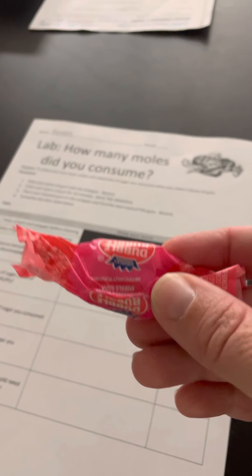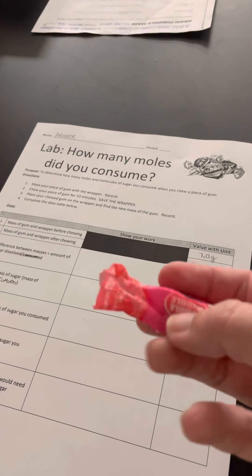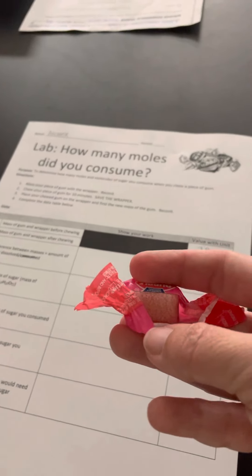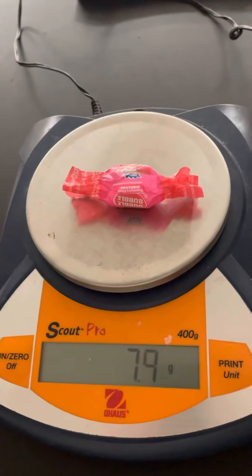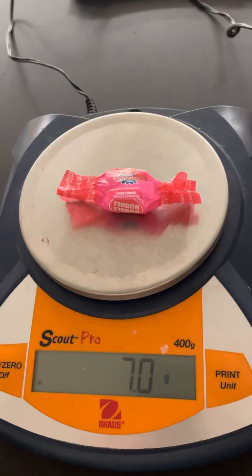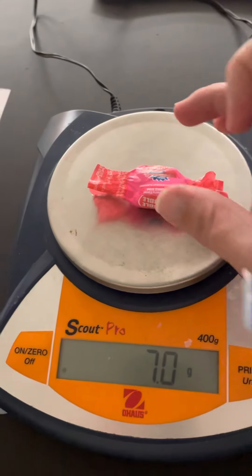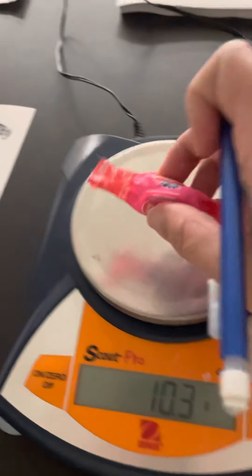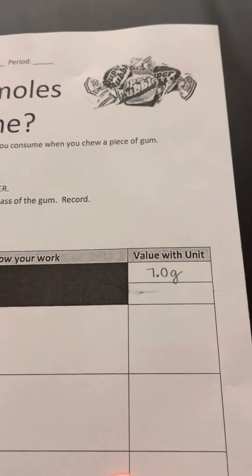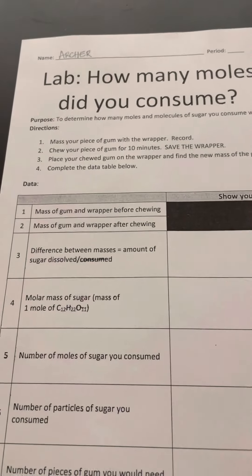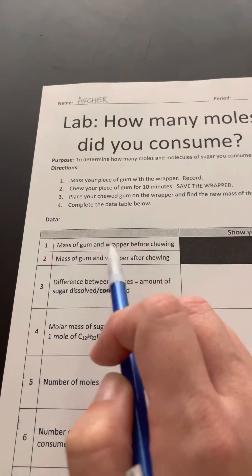So today we're going to be looking at a piece of bubble gum. The bubble gum is still in its wrapper and I'm going to put it on the balance — it is 7.0 grams. Then I'm going to record that in line one of my lab: 7.0 grams, which is the mass of the gum and the wrapper before chewing.